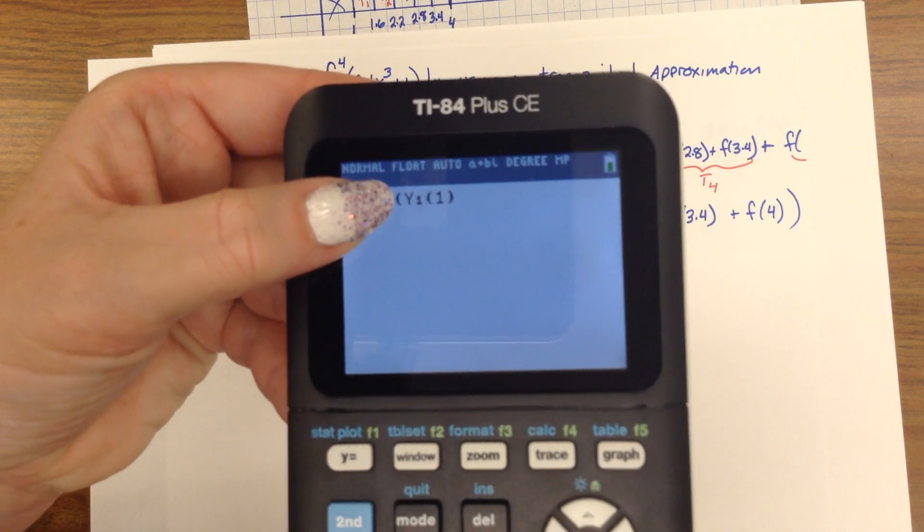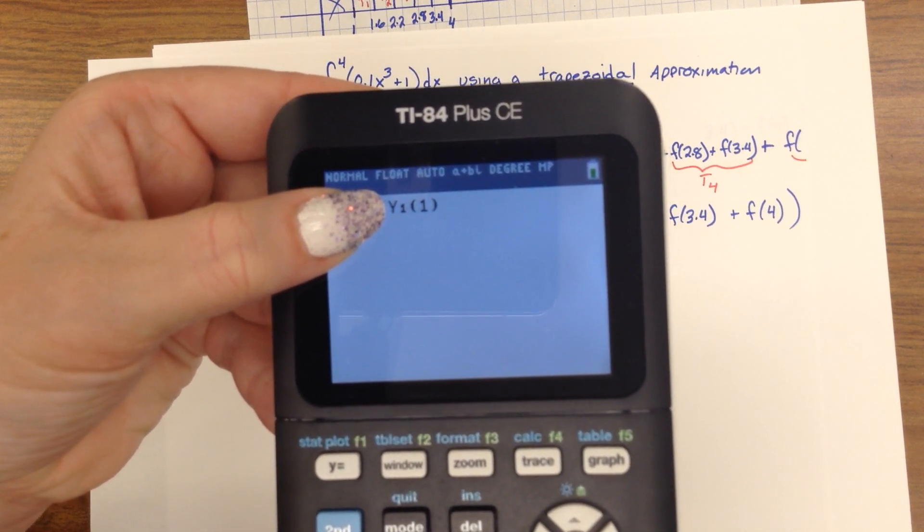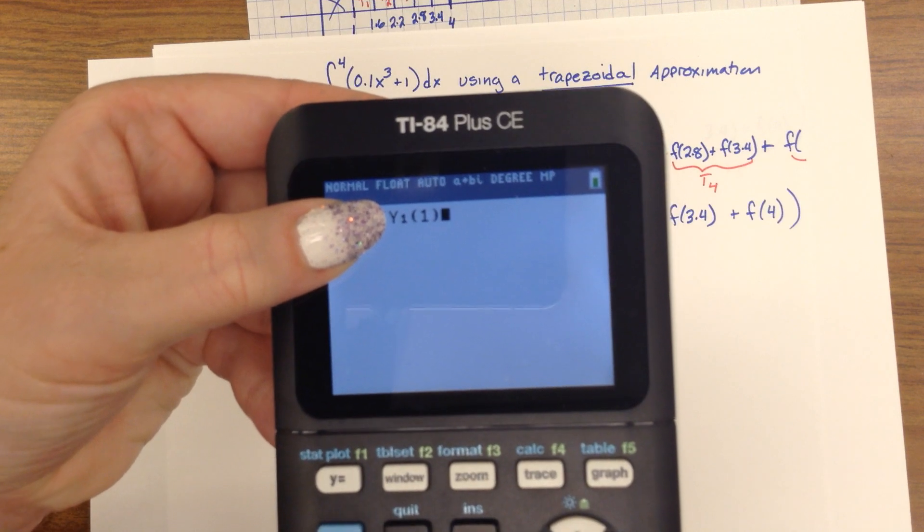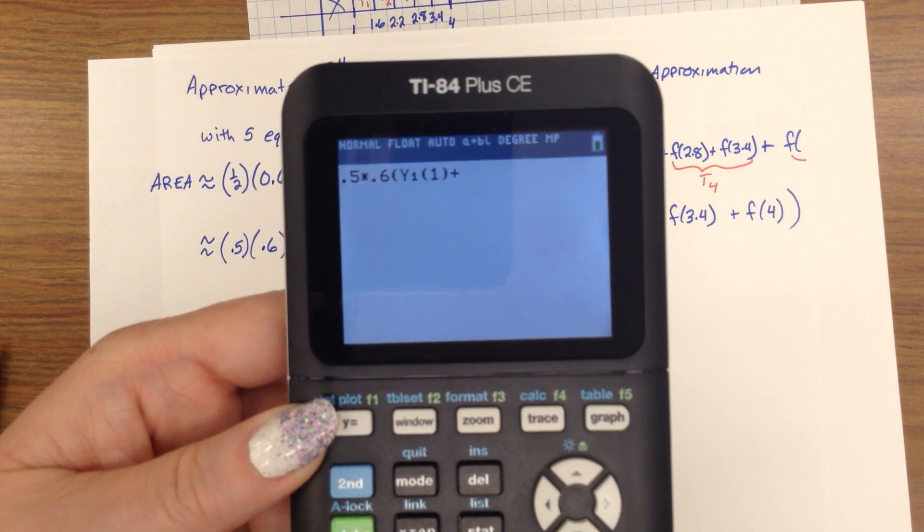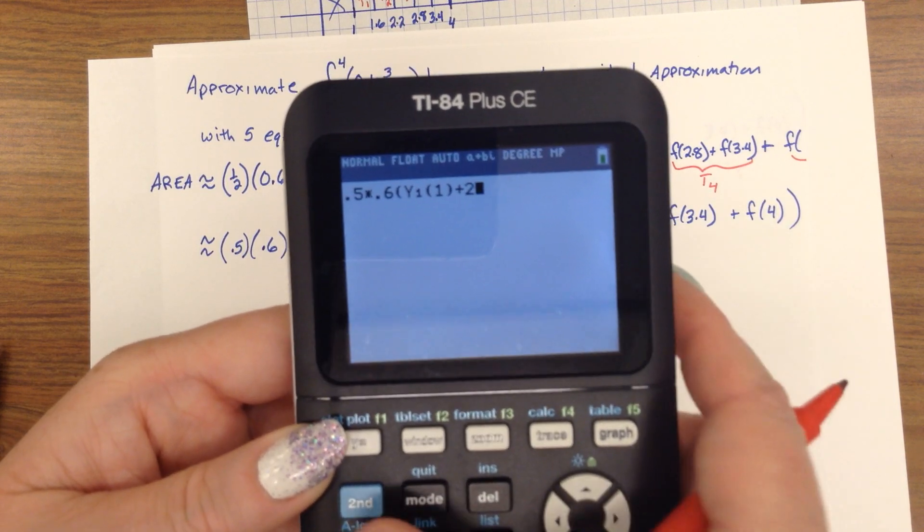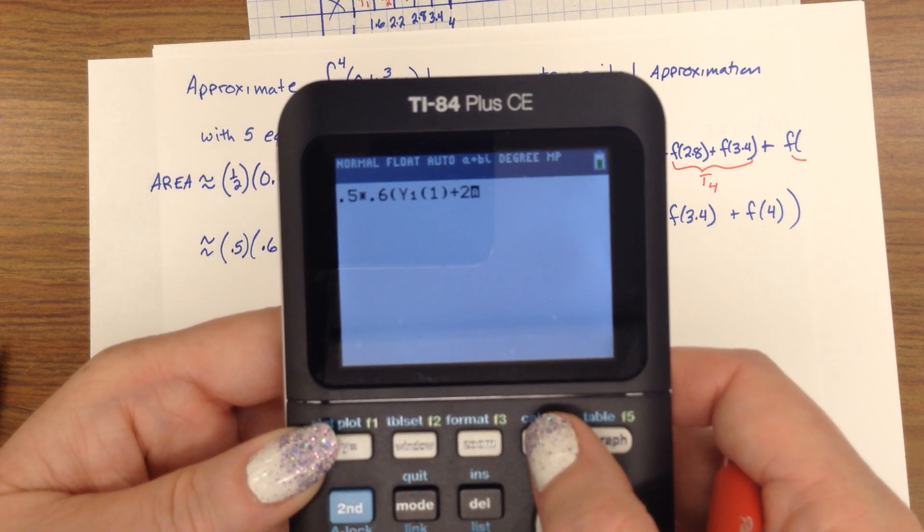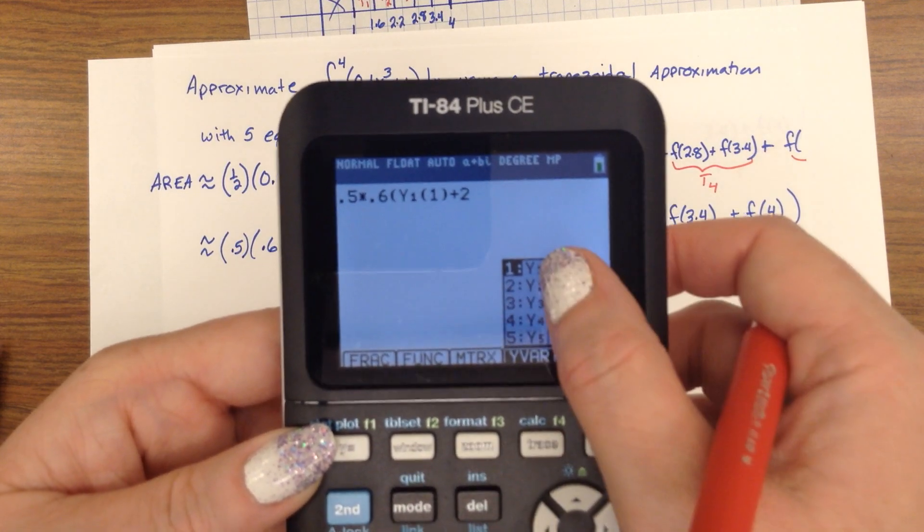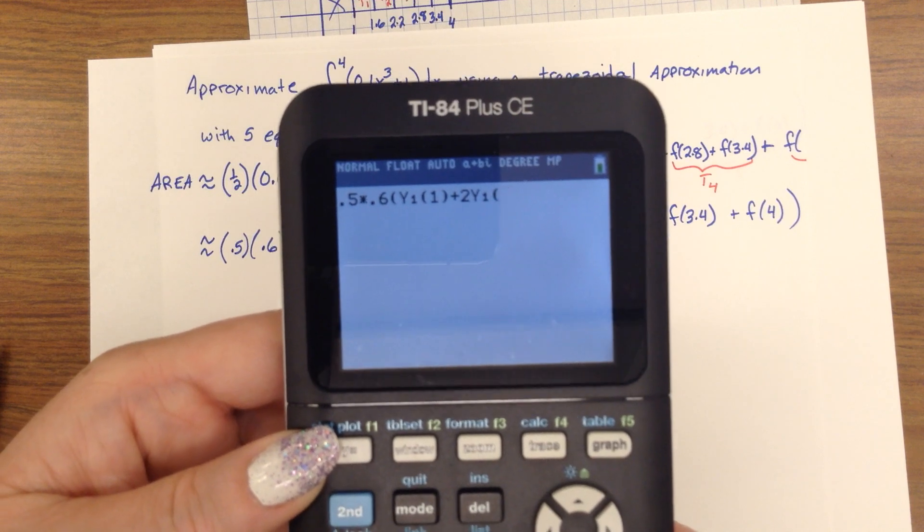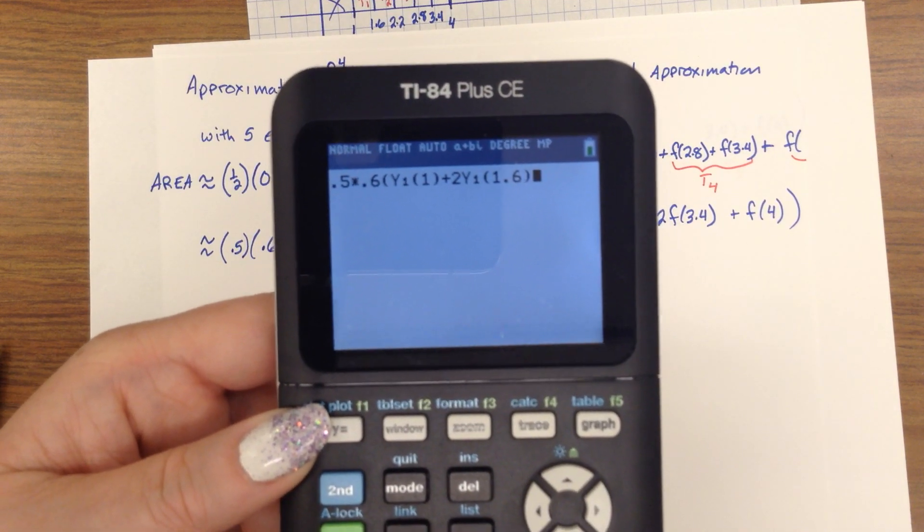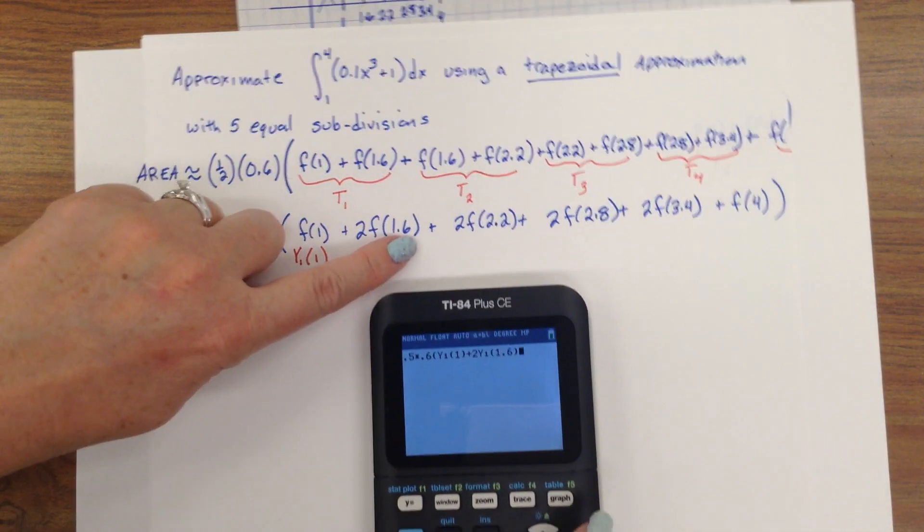That part, right after that, that is F of 1. Yeah, you just typed in F of 1, calculator style. We need to keep going. So, from there, plus, now remember, it's doubled the next one. So, 2. Here we go again. The alpha key. The F4 shortcut menu. Hit enter on y1. And an open parentheses. And our next number we filled in was 1.6. Close that parentheses. All right. I'm going to keep typing. So, I'm up to here. I'm going to keep at it.